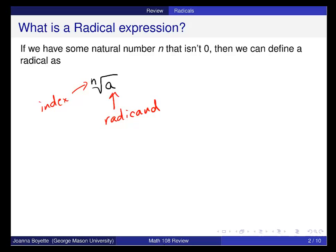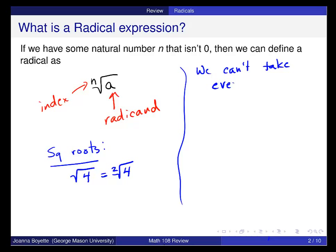A couple things to jog your memory. Typically when we're working with square roots, the square root of 4 for example, we don't write the two here, but these two things are equal. So the index in that notation is 2. And the other thing about square roots is, we can't take even roots of negative numbers, or those are not real numbers anyway.